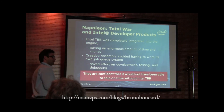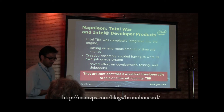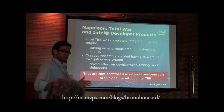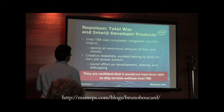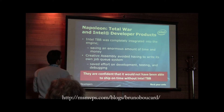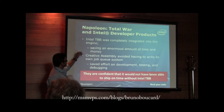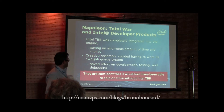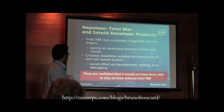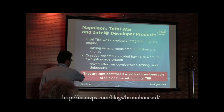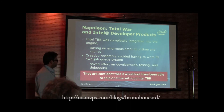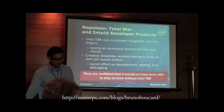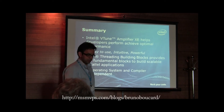Napoleon: Total War and Total War: Empire — those are two games — and we also used it in Shogun 2, which was actually released with Intel TBB completely integrated into the engine. It saved an enormous amount of time and money for development. Creative Assembly basically avoided having to write its own job queue system, saving effort on developing, testing, and debugging. They say they are confident they would not have been able to ship on time without using Intel Threading Building Blocks.